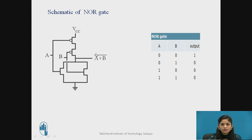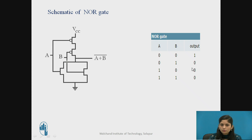For the NOR gate, two PMOS are connected in series condition in the pull-up network, and two NMOS are connected in parallel condition in the pull-down network. Two inputs, input A and input B, are provided and the output is A plus B whole bar. In the truth table: when both inputs are low the output is high; when any one input is high the output is 0; and when both inputs are high the output is also 0.